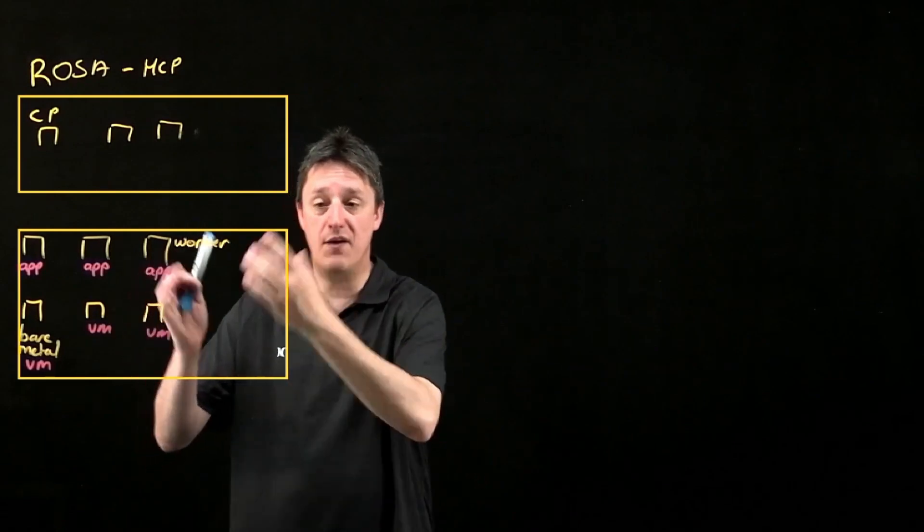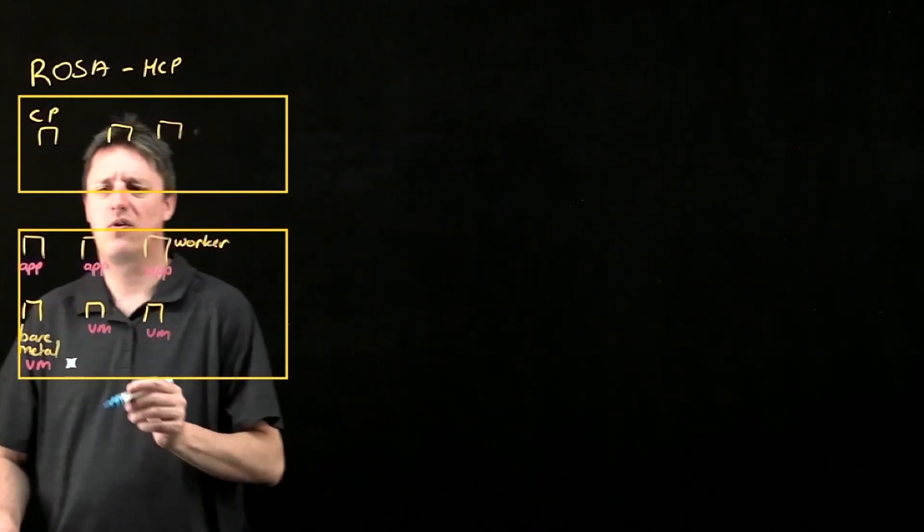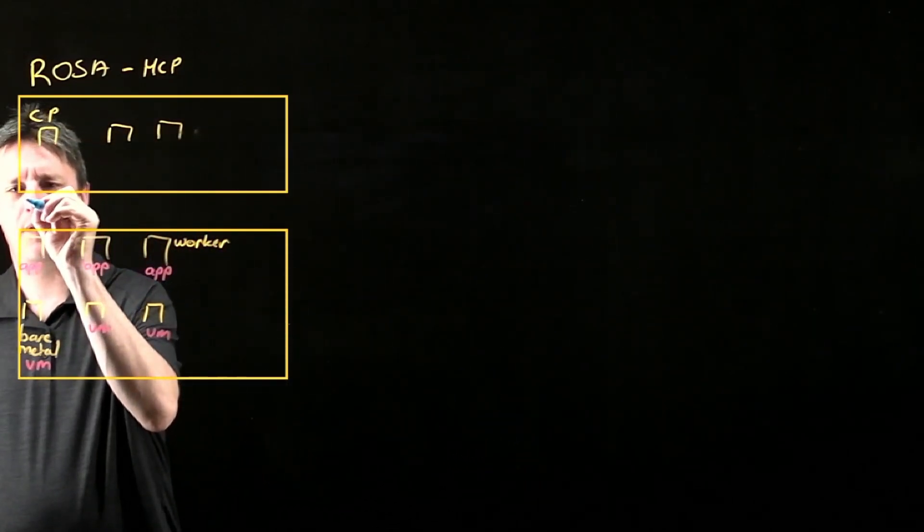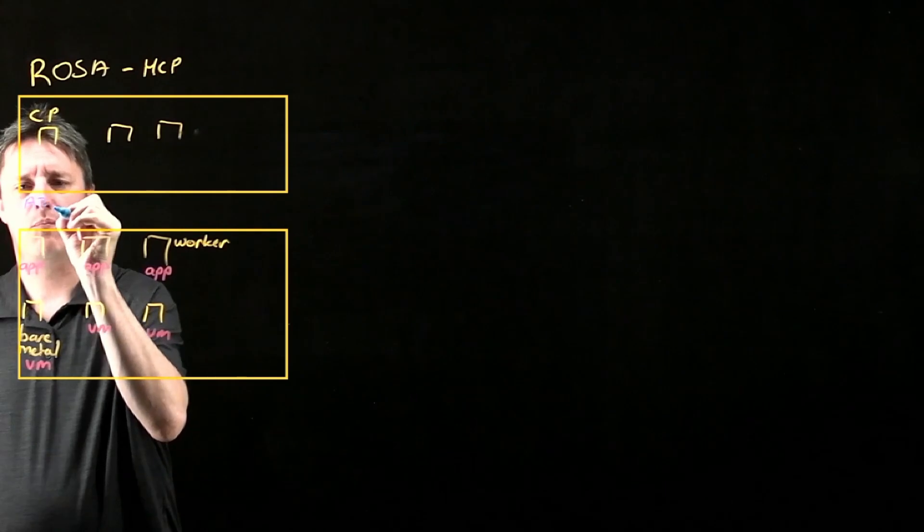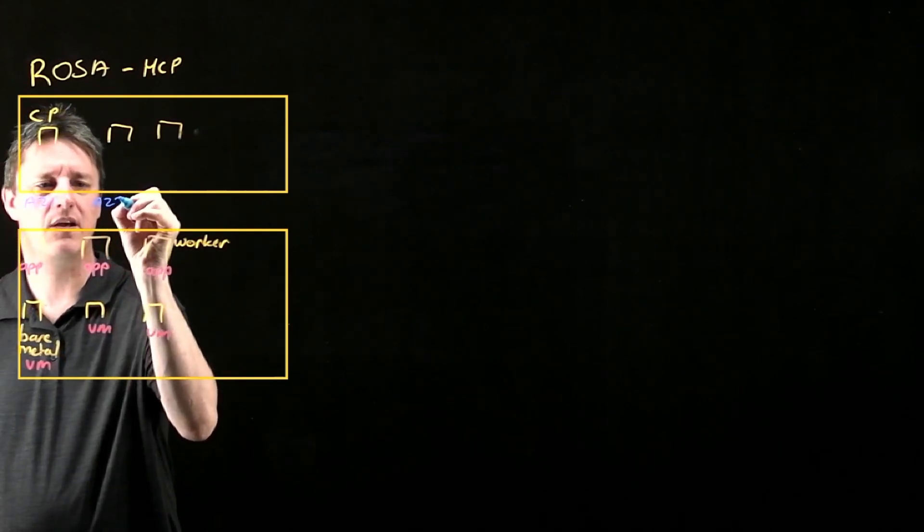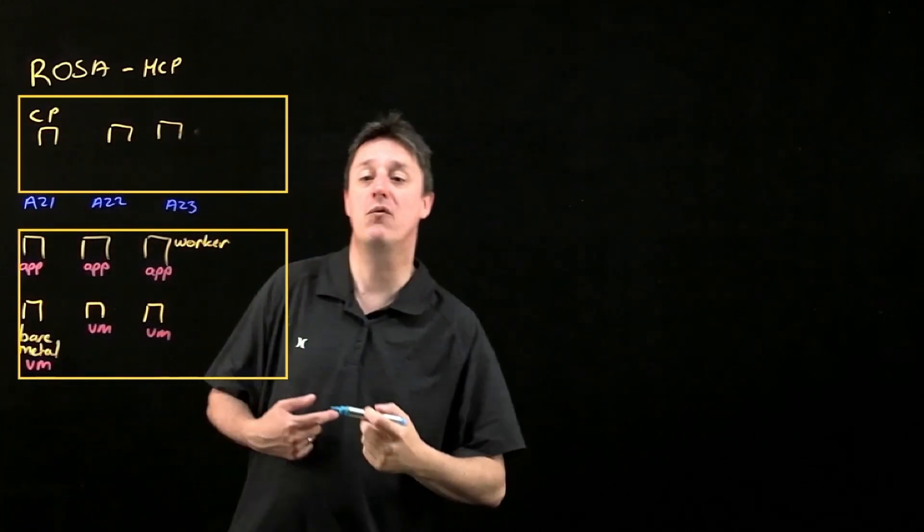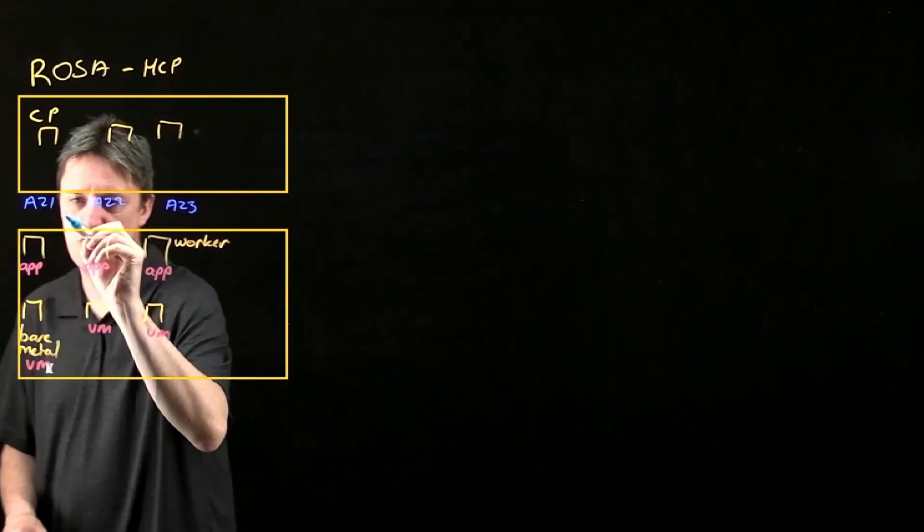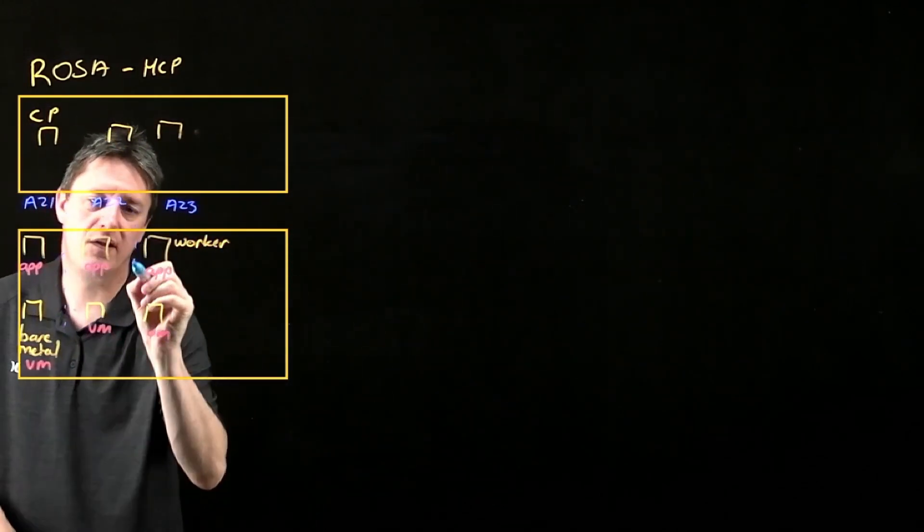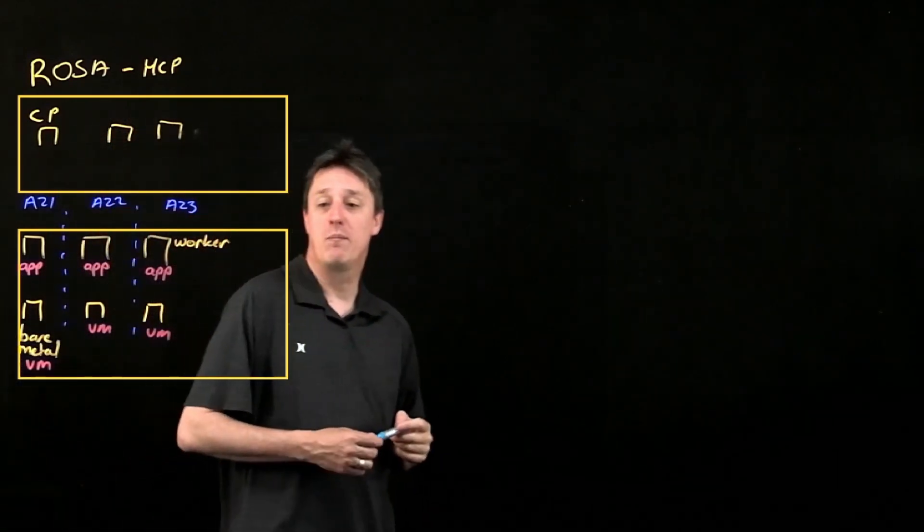Notice over here, everything is split in threes. What we do is we will typically spread this across multiple AWS availability zones. In so doing, we combine the resilience model of OpenShift with the resilience model of AWS.